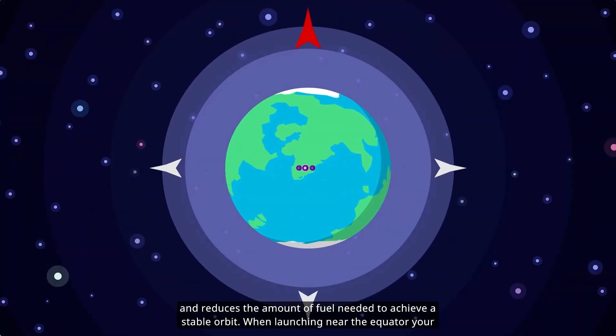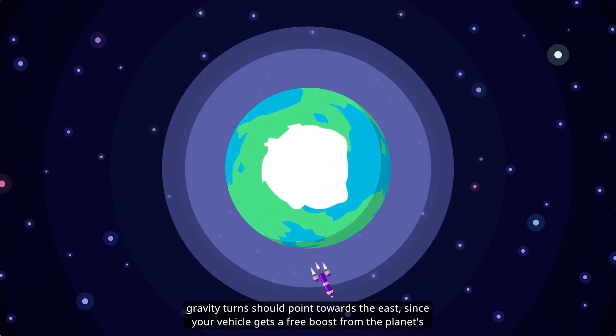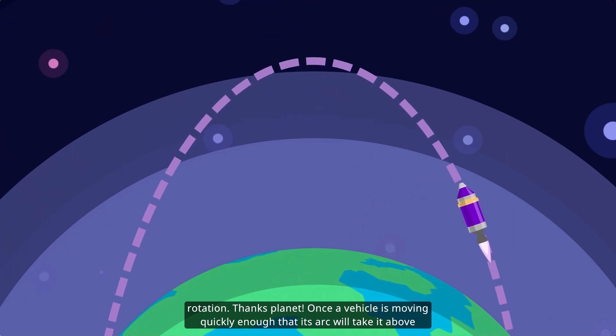When launching near the equator, your gravity turn should point toward the east since your vehicle gets a free boost from the planet's rotation. Thanks, planet!